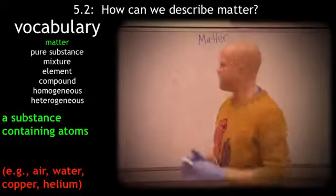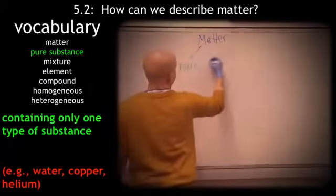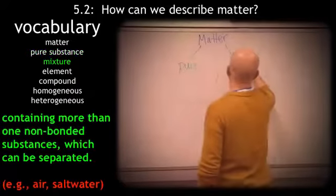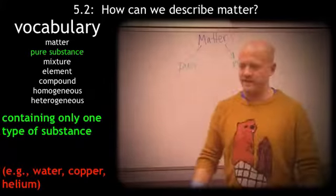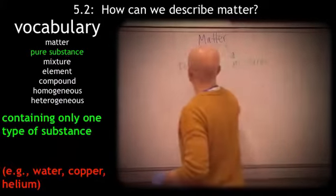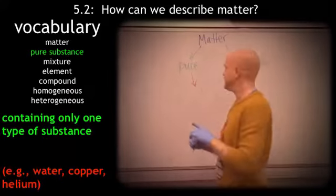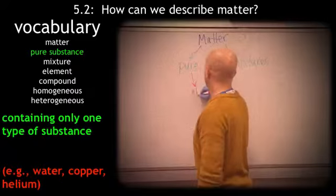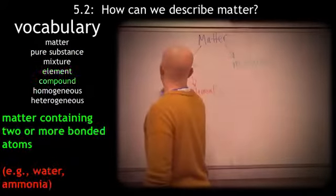When we break down matter, we have pure substances and mixtures. An example of a pure substance is when there's only one type of thing, atom, or compound present. A pure substance can either be an element or a compound.